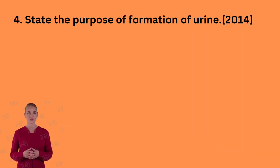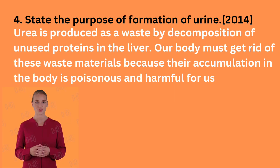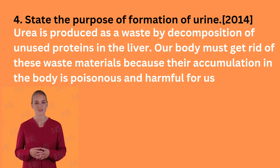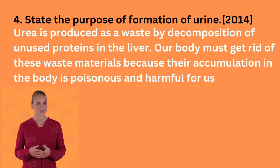This is also a 2014 question. State the purpose of formation of urine. Urea is produced as a waste by decomposition of unused proteins in the liver. Our body must get rid of these waste materials because their accumulation in the body is poisonous and harmful for us.